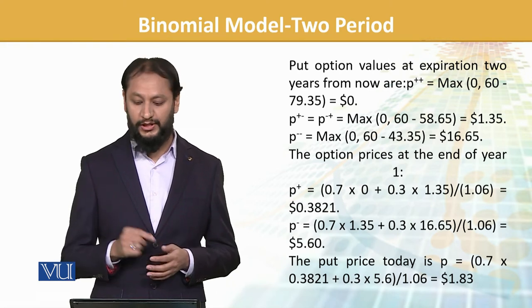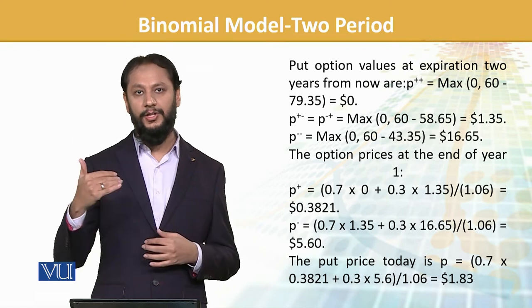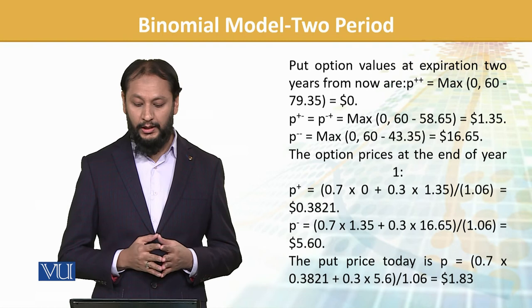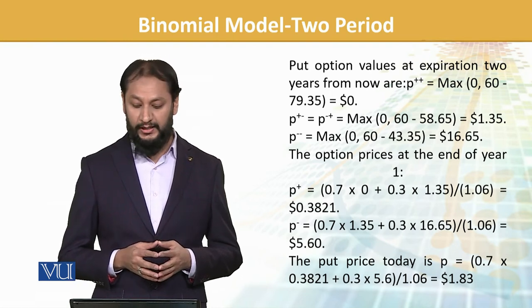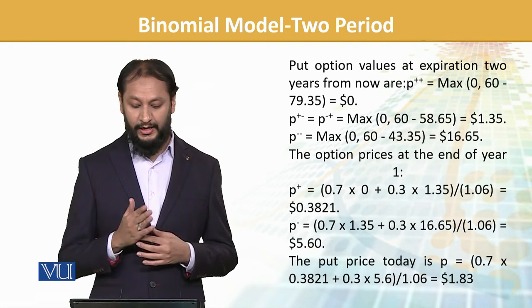$60 minus $58.65, and if the share price has two downs, it will be giving us a benefit of $16.65. So the option price at year end can be calculated based on this pattern.